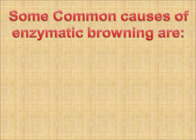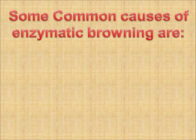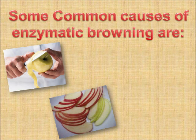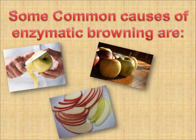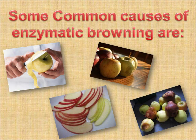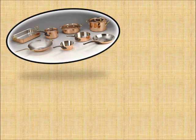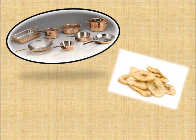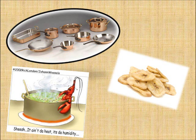Enzymatic Browning is commonly caused by processes that release enzymes from the skin tissues of fruits and vegetables, such as peeling, cutting, bruising or natural deterioration. Additionally, the use of copper or iron pots and pans, increased exposure to air and humid conditions, further quicken the process.